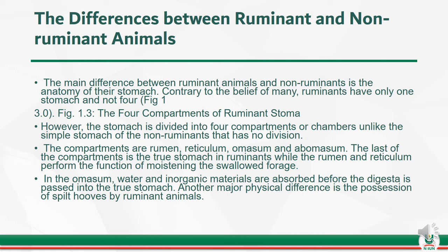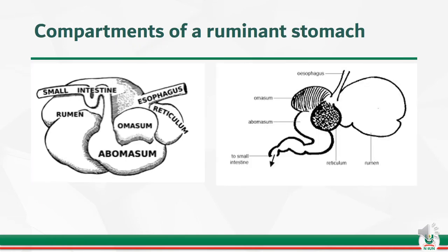Another major physical difference is the possession of split hooves by ruminant animals. The sketch or images of the compartments of the rumen and stomach are displayed for your careful study.